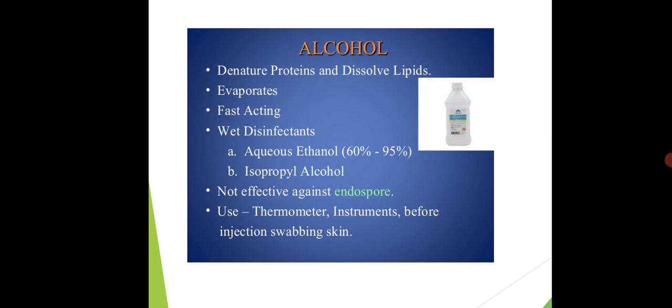It evaporates. There is fast action when we use alcohol. It acts as wet disinfectant. Example is isopropyl alcohol and aqueous ethanol, which is used in dilution rate of 60% to 95%. Alcohol is diluted. It is not effective against spores.